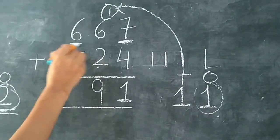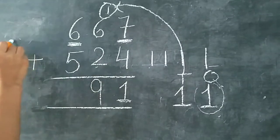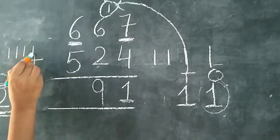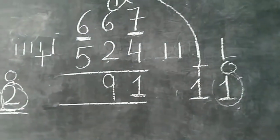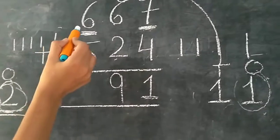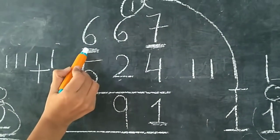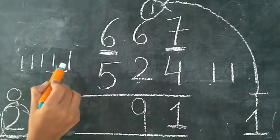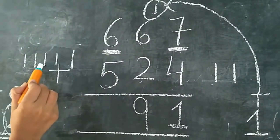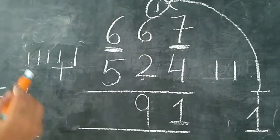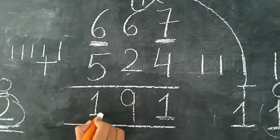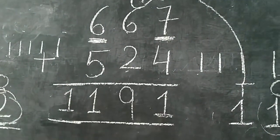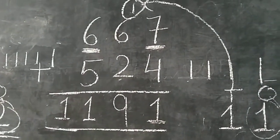6 is already right here, so we don't draw lines here. We start with 5 lines: 1, 2, 3, 4, 5. Now we have to count. 6 toh already likha hai, 6 ke baad se count karna hai. 6, 7, 8, 9, 10, 11. So the digit is 11. The answer is 1191.